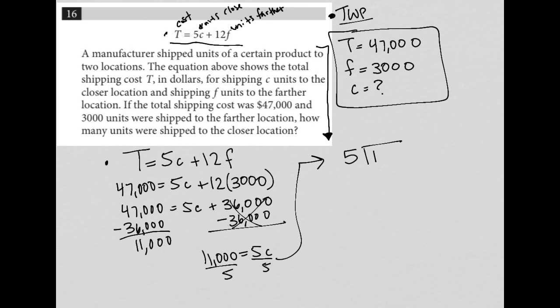So I'm going to say, how many times does 5 go into 11,000? 5 goes into 11 twice. That's 10, bring down the 0. 5 goes into 10 twice. And it looks like I'm going to have two 0s there. So my solution here, C is equal to 2,200.